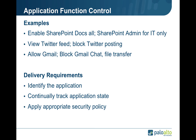Delivery requirements for function control are pretty specific and unique. First, you need to be able to identify the application and continually monitor the state of that application. When that application changes state, you need to identify that state change and translate it into policy decision-making. For example, when I log into Gmail, I need to be able to see that that is Gmail traffic. But when I switch to Gmail chat or begin transferring files, the firewall needs to see that change in state and feed it into the policy table for appropriate control mechanisms.